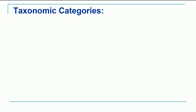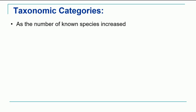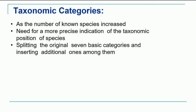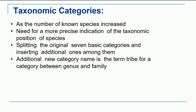Some more characteristics of taxonomic categories: as the number of known species increased, the need arose for more precise indication of the taxonomic position of species. Since more species were identified, more precise taxonomic categories were required. This was accomplished by splitting the original seven basic categories and inserting additional categories between them, resulting in a more precise classification system.